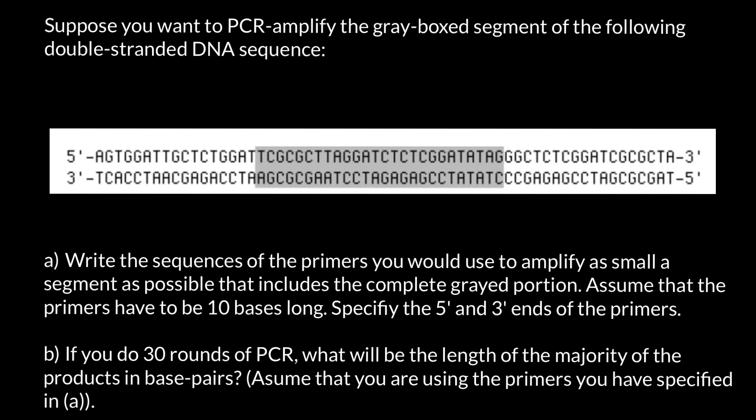Hello and welcome to Nikolai's genetics lessons. Today's question is: Suppose you want to PCR-amplify the gray boxed segment of the following double-stranded DNA sequence. Question A: Write the sequences of the primers you would use to amplify as small a segment as possible that includes the complete grayed portion. Assume that the primers have to be 10 bases long. Specify 5-prime end and 3-prime ends of the primers.